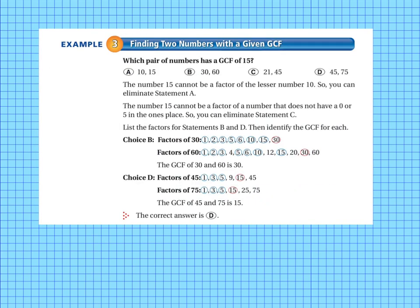Now we're going to look at finding two numbers with a given greatest common factor. So this is where the book or the problem gives you a greatest common factor and you find the two numbers. So which pair of numbers has a greatest common factor of 15? So we look at our choices, 10 and 15, 30 and 60, 21 and 45, or 45 and 75. So it says the number 15 cannot be a factor of the lesser number 10. So 15 doesn't go into 10. So it's not A.